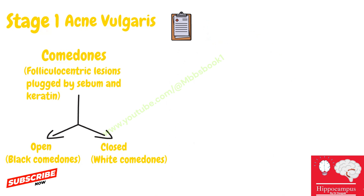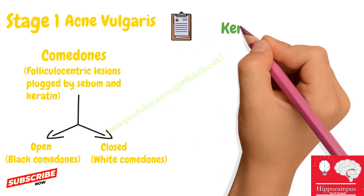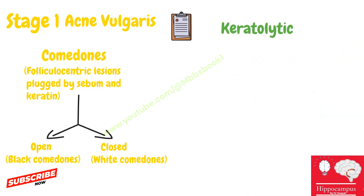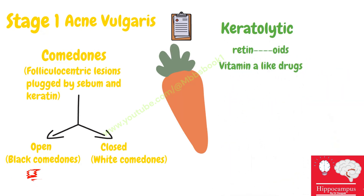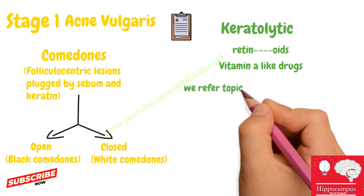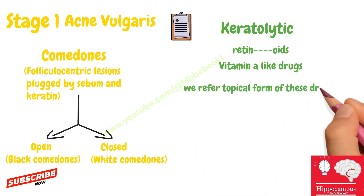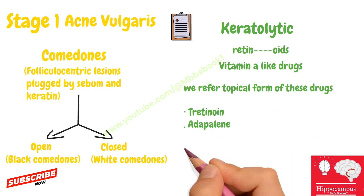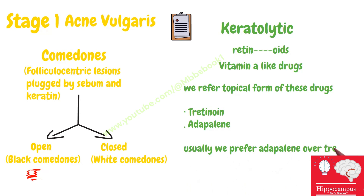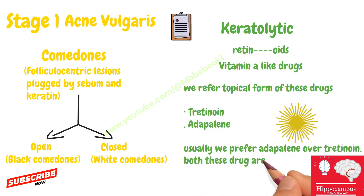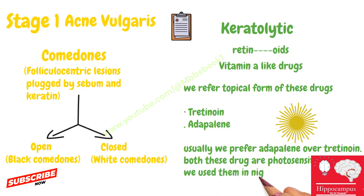Treatment of stage one acne vulgaris involves keratolytics and retinoids. Retinoids are vitamin A-like drugs. We prefer the topical form; the drugs used are tretinoin and adapalene, with adapalene generally preferred over tretinoin. Importantly, all these drugs are photosensitive, so they are used at night only.